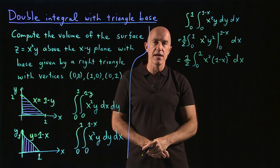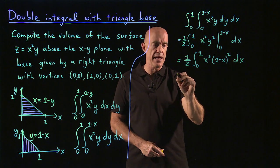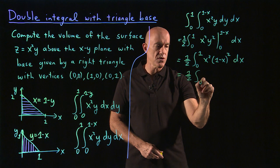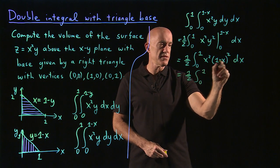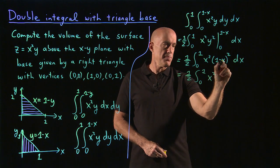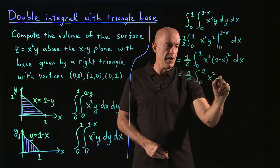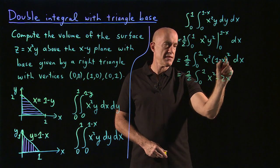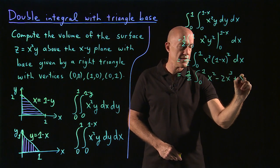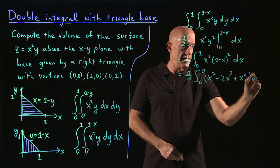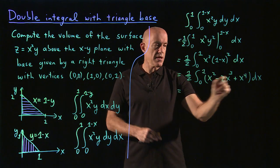I think the easiest way to do that is just to expand this out into a polynomial. So 1 half the integral from 0 to 1. So the first term here is 1. So x squared minus 2x cubed plus x to the fourth dx.